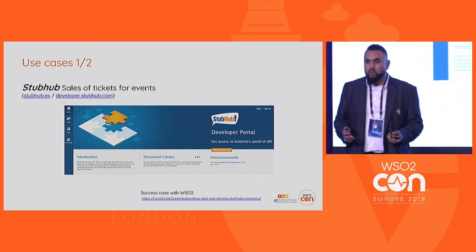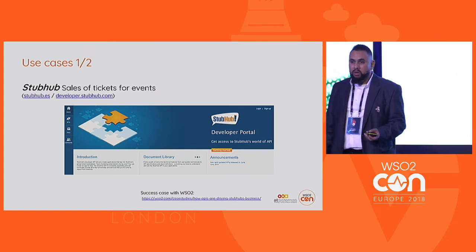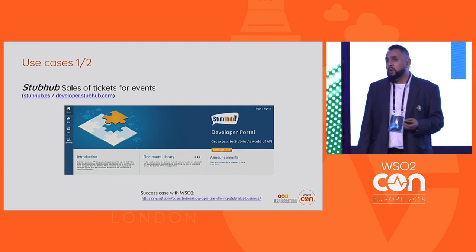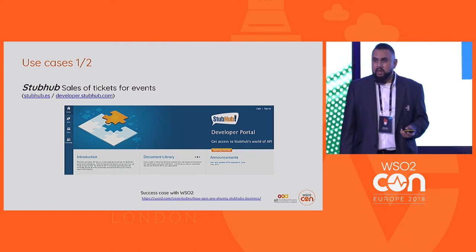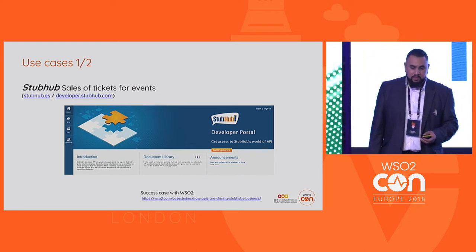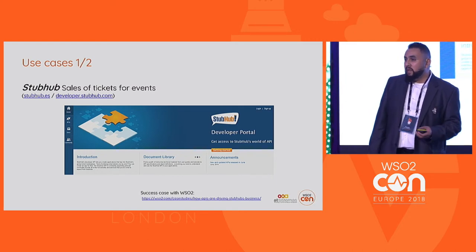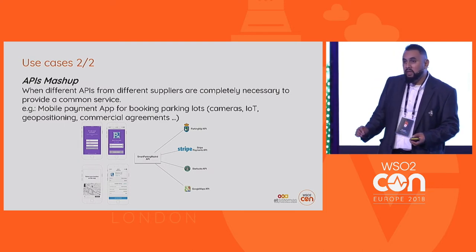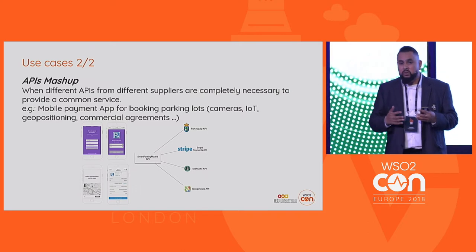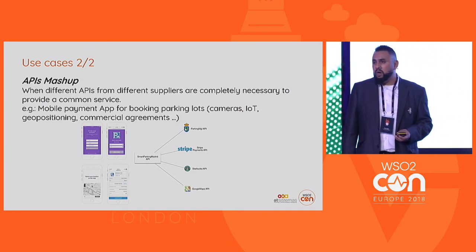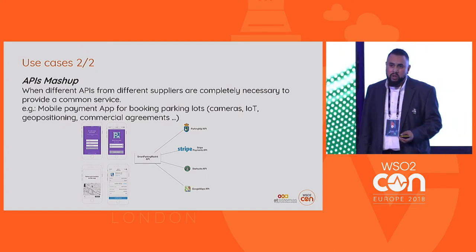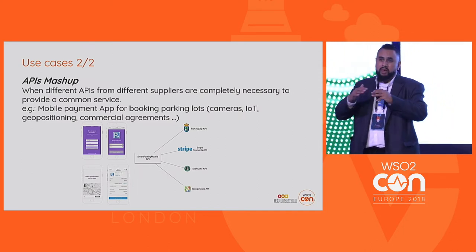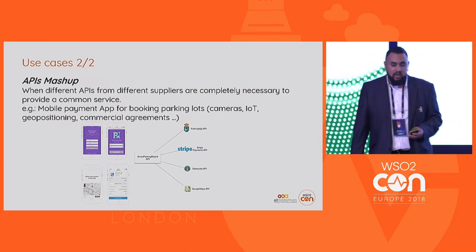We frequently refer to success cases to exemplify the power of this economy. For instance, we refer to the use case of StubHub, which is one of the success cases implementing WSO2 modules — a niche solution focused on building applications around the sales of tickets for events. There is also another opportunity: you can take APIs from different providers to create a new and richer service. For example, combining an API providing GPS positioning with another providing available parking spots, using a payment gateway API, and on top creating a loyalty program to create a richer experience for clients.